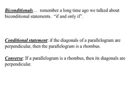Biconditional statements: a long time ago we learned about biconditional — those 'if and only if' statements. A conditional statement: if the diagonals of a parallelogram are perpendicular, then the parallelogram is a rhombus. The converse: if a parallelogram is a rhombus, then its diagonals are perpendicular. You can use those conditional statements and converses to classify shapes throughout the lesson.